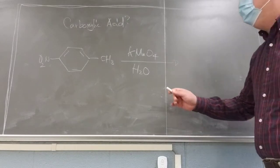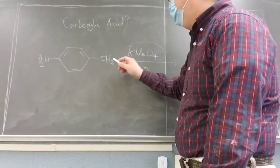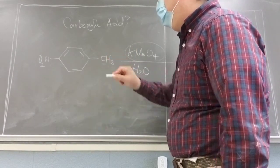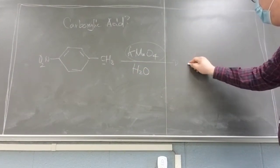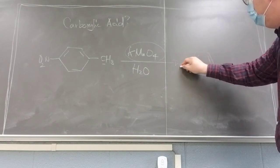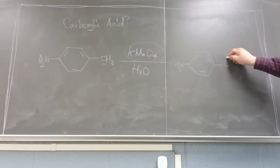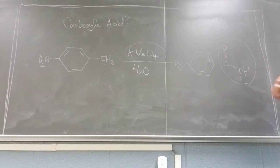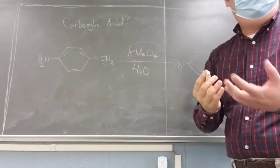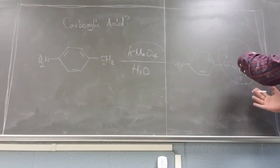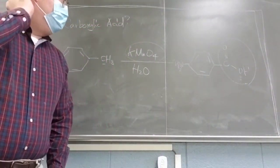So here's the thing: if you have permanganate, which is a very good oxidizing agent, you just need to find your benzylic position, which is the carbon right next to your benzene ring. Then you just need to add a carbonyl group. So this is the carbon at the benzylic position. With a really good oxidizing agent you can have a very well-oxidized carbon, which gives the carboxylic acid.